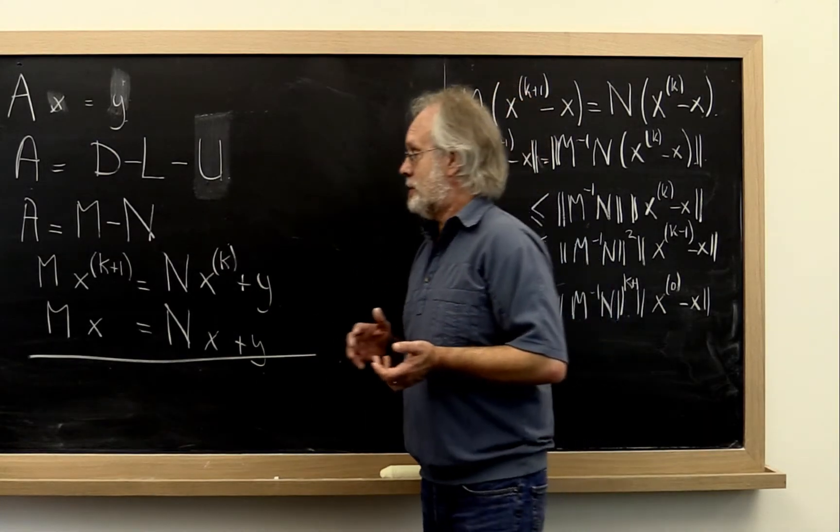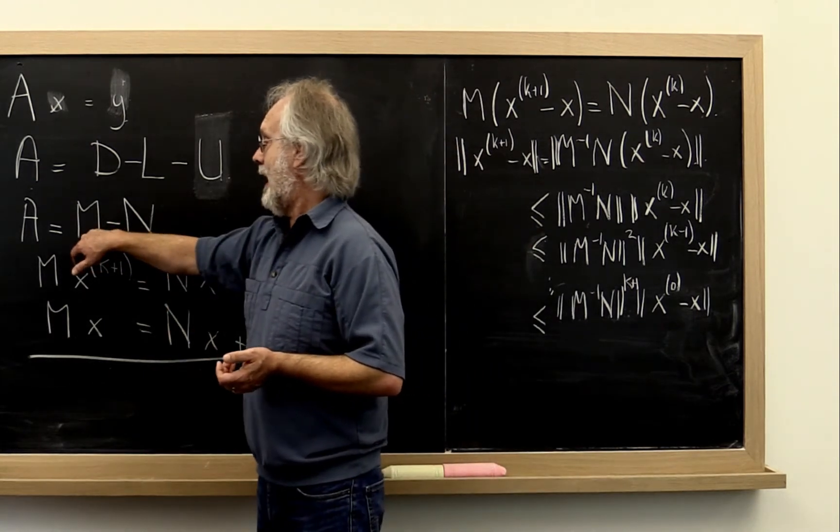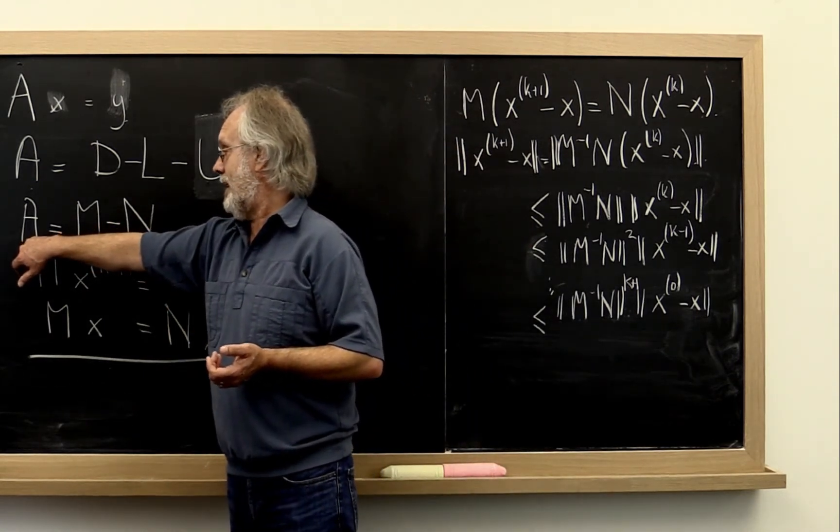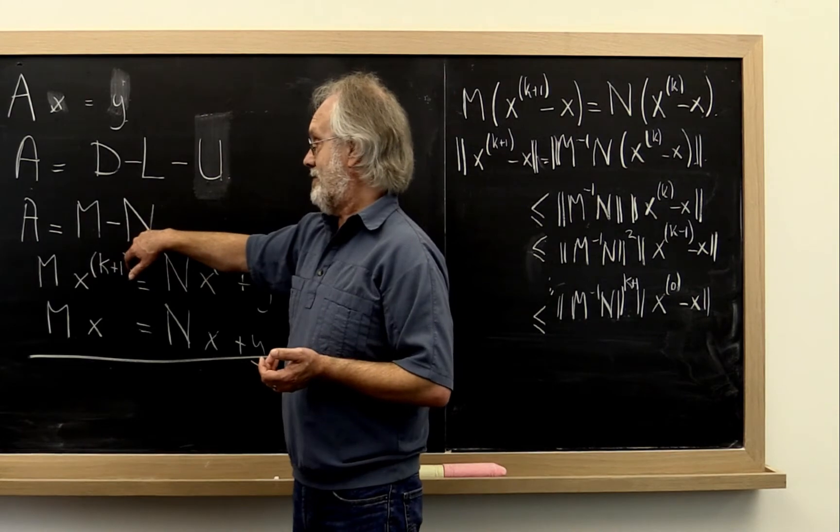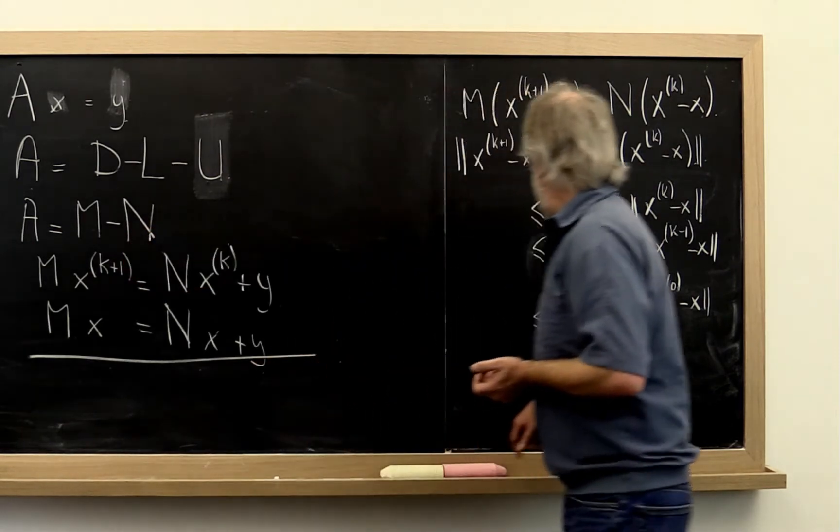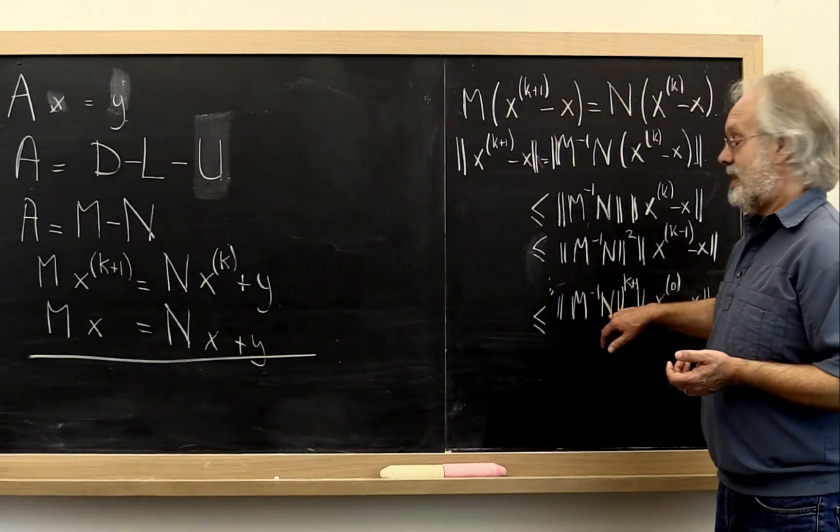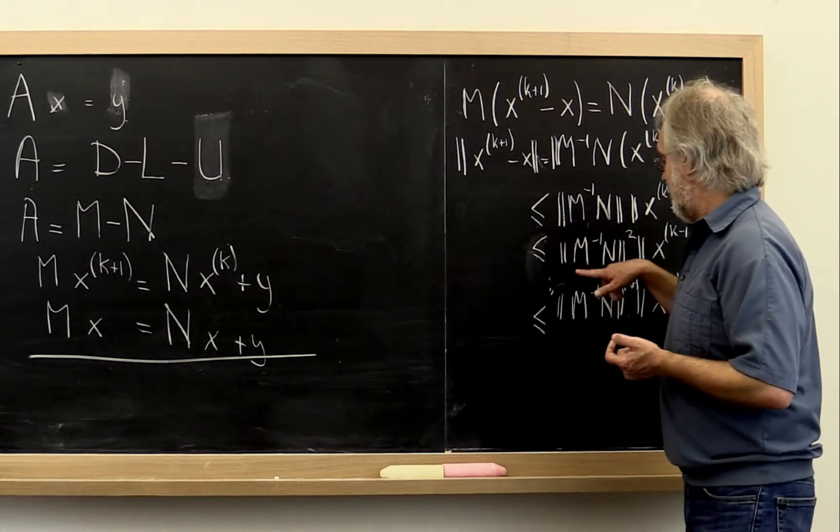So the answer to the puzzler is if you take M to be all of matrix A, then N is the zero vector. And therefore M inverse times N is the zero matrix.